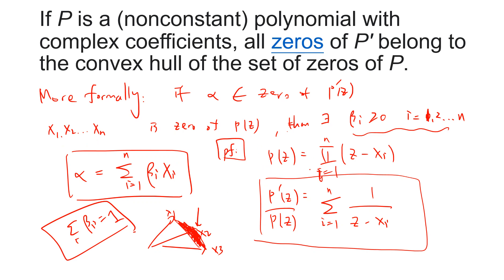For the proof: write P(z) as a constant times the product from i=1 to n of (z − x_i). Then P'(z) divided by P(z) equals the sum from i=1 to n of 1/(z − x_i). This is straightforward because P(z) has zeros x1 up to xn, so we can write P as that product and differentiate.